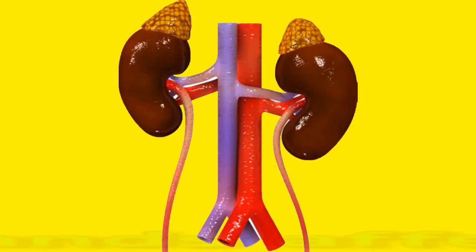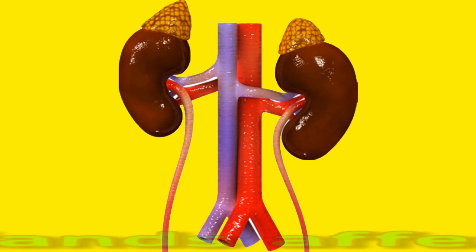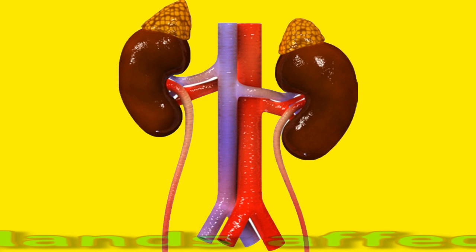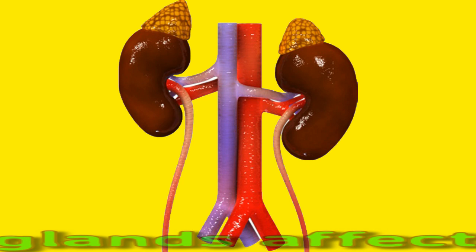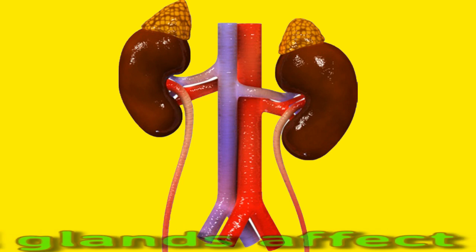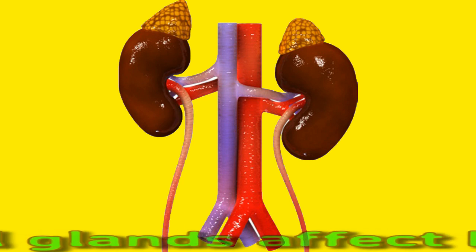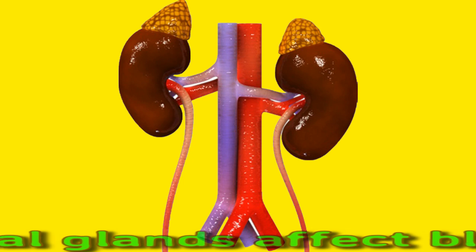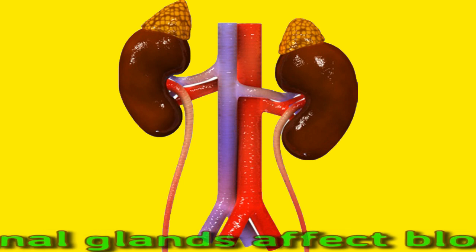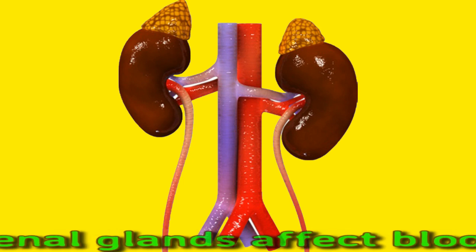Can the adrenal glands affect blood pressure? Adrenal glands produce several hormones that affect and control a person's blood pressure, including cortisol, aldosterone, adrenaline (or epinephrine), and noradrenaline (or norepinephrine). People can develop hypertension if their adrenal glands overproduce one or more of these hormones.